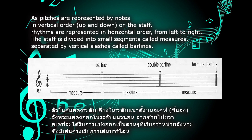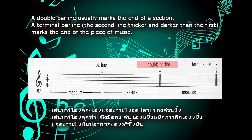The staff is divided into small segments called measures, separated by vertical slashes called bar lines. A double bar line usually marks the end of a section. A terminal bar line, the second line thicker and darker than the first, marks the end of the piece of music.